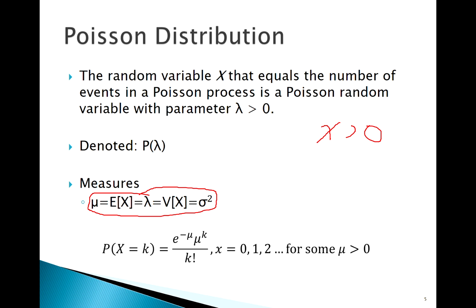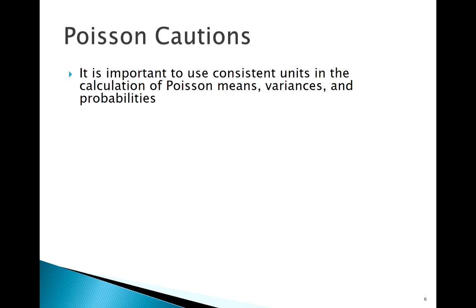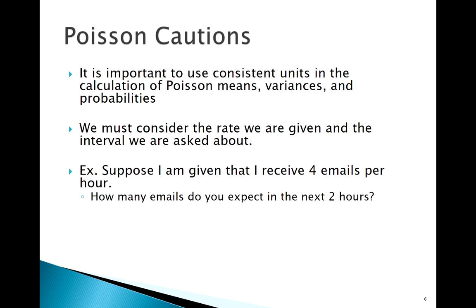Here are some things to think about with the Poisson. A lot of times maybe the units aren't so important, but with the Poisson, the units are really important. We really have to pay attention to what we're given in the problem, what we know about this situation, what we expect, and what we're actually asked about. Say I've observed in the past that I get about four emails per hour in my inbox. But what if the question asks, how many emails do I expect in the next two hours?